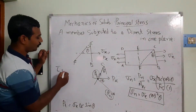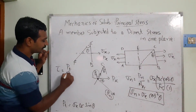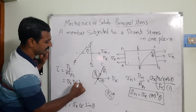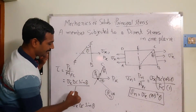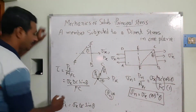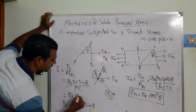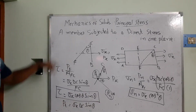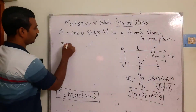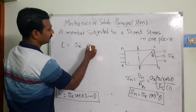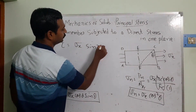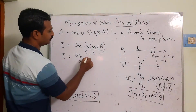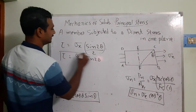Now I want to find the shear stress — the stress parallel to FC. Tau equals PT divided by the cross-sectional area of FC. PT = Sigma X × BC × sin θ, divided by FC. This gives tau = Sigma X × cos θ × sin θ. Further simplification using the double-angle identity gives tau = (Sigma X / 2) × sin 2θ.